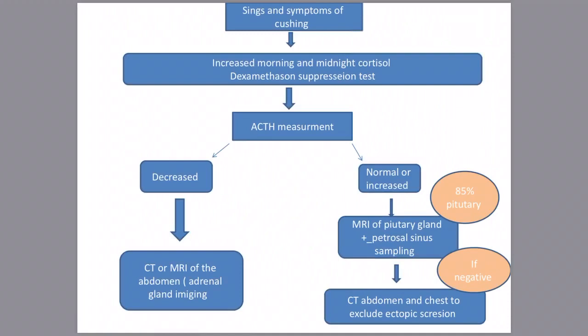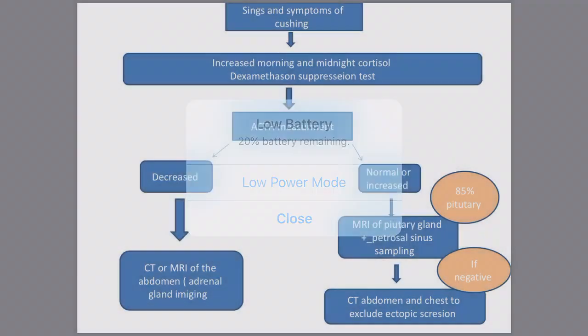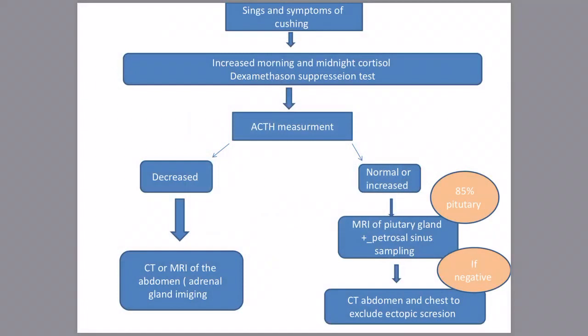In ACTH-independent Cushing's syndrome, ACTH is suppressed or decreased, so CT or MRI of the abdomen is performed to detect the adrenal cause — most commonly unilateral adenoma, or bilateral hyperplasia, or rarely carcinoma.